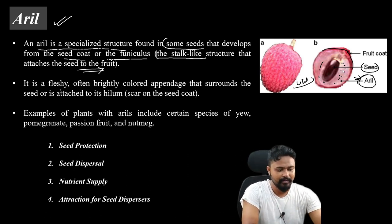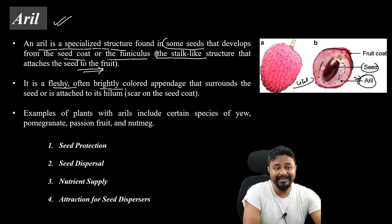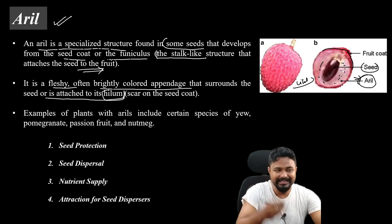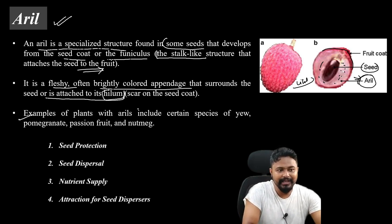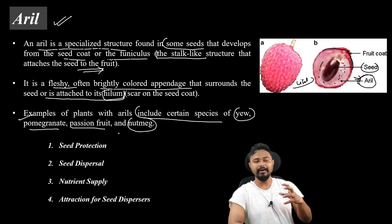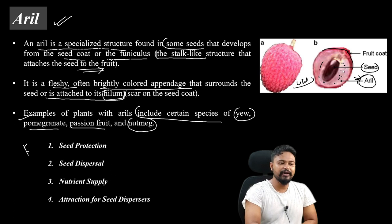The aril is fleshy and often brightly colored. It is an appendage that surrounds the seed or is attached to its hilum area. Examples of plants with arils include certain species of pomegranate, passion fruit, and nutmeg.